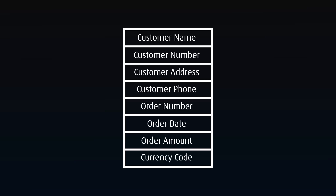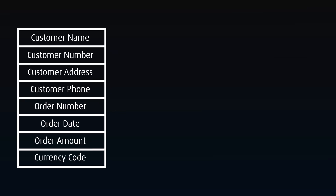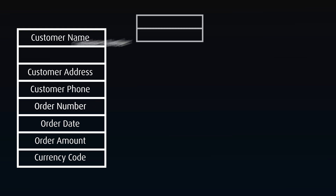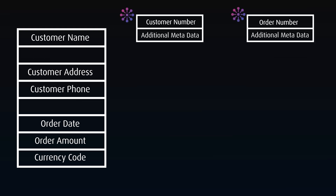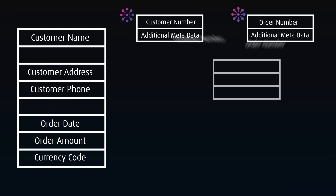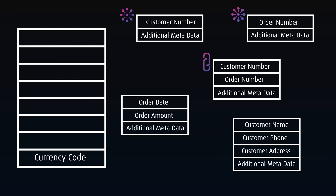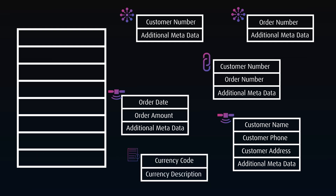For example, let's look at a source containing sales data. We'll separate out important attributes into hubs — we have customer data and order data. Our customers and orders are connected through a customer order link table. The attribute data for each hub and link is put into satellite tables and connected to their parent table, and lookup data is put into reference tables to be used when needed.